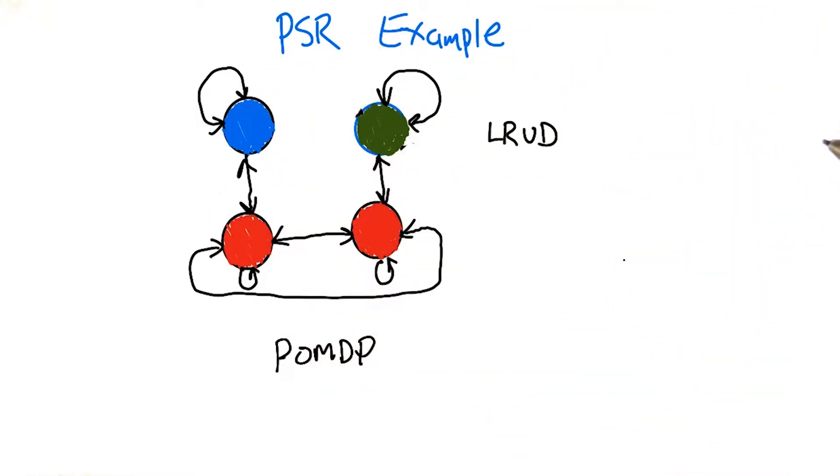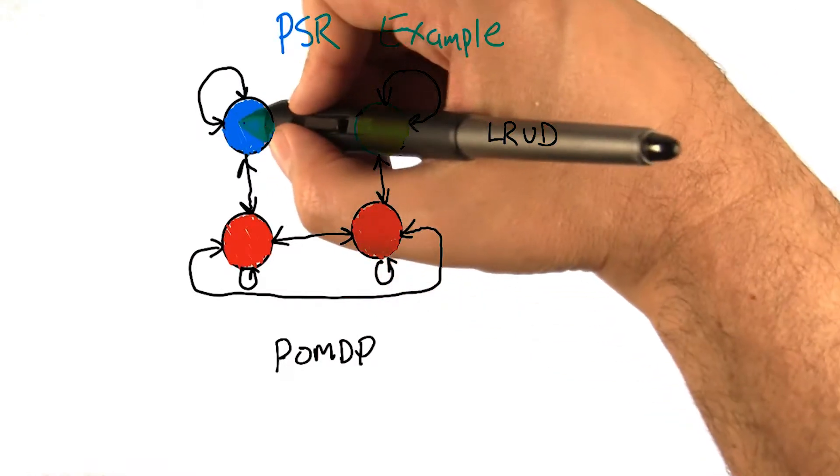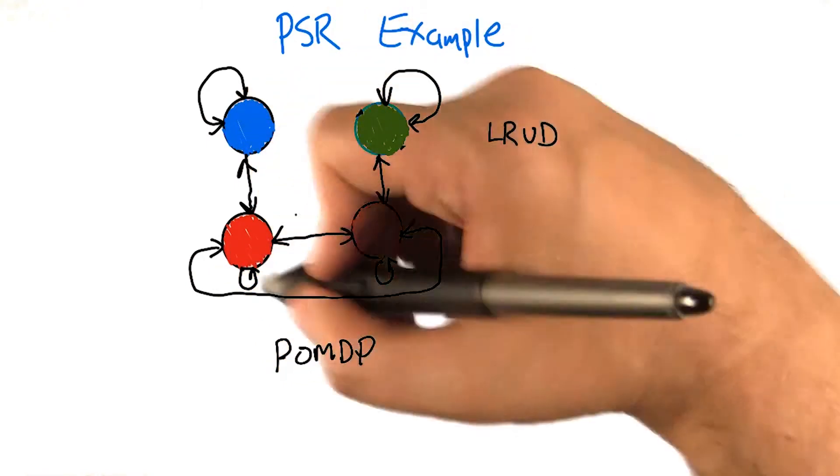And these four states and these three possible observations. And so we can represent this as a POMDP if we know these dynamics, we know this system, we know this model. We can represent what's the probability we're in each of these states: one, two, three, four of the states.